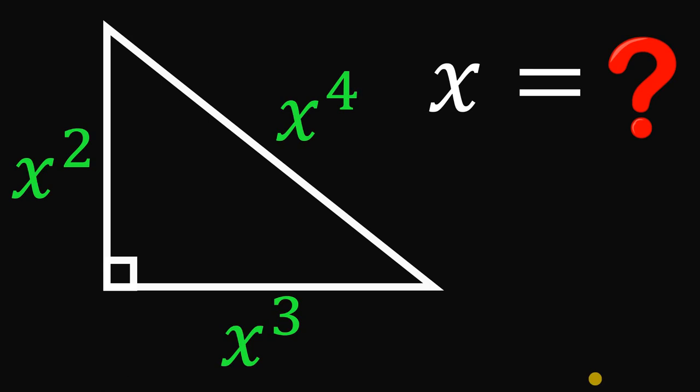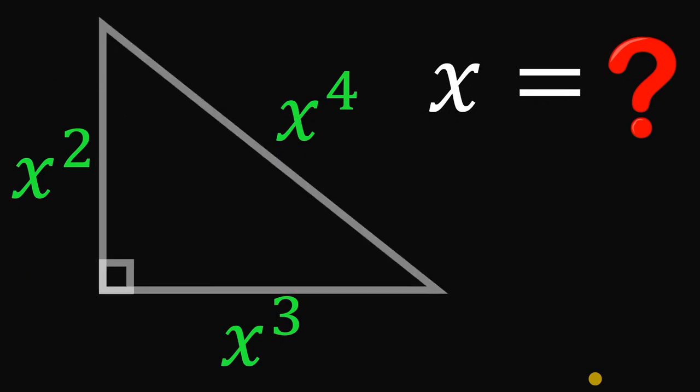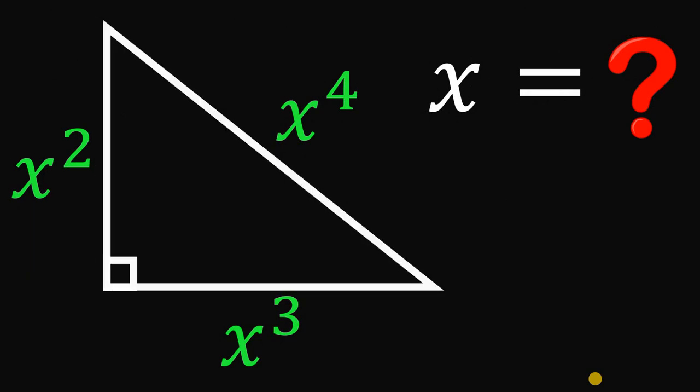Can you solve this geometry challenge? Given this right triangle with side lengths x squared, x cubed, and x raised to the fourth power, our goal is to solve for the value of x.